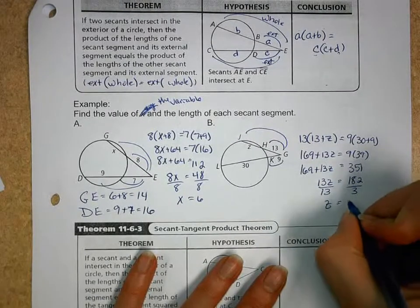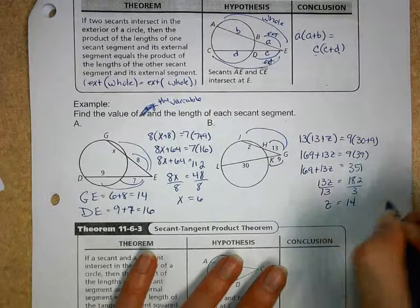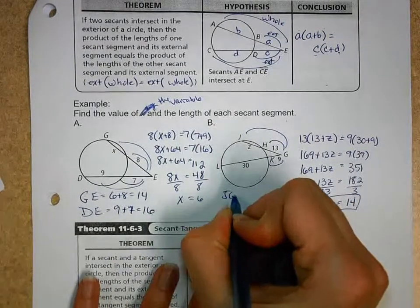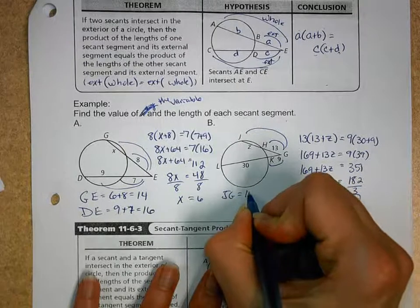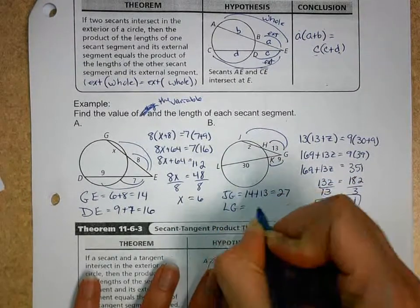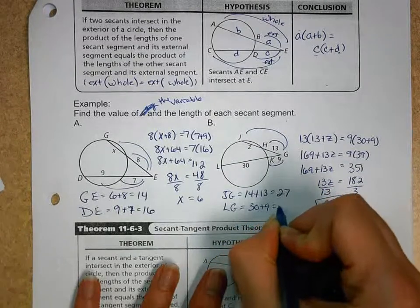All right. Let's divide by 13. Z is going to equal 14. Now we just got to plug it into the two segments. Segment GJ is 14 plus 13, which is 27. And LG we already know is 30 plus 9, which is 39.